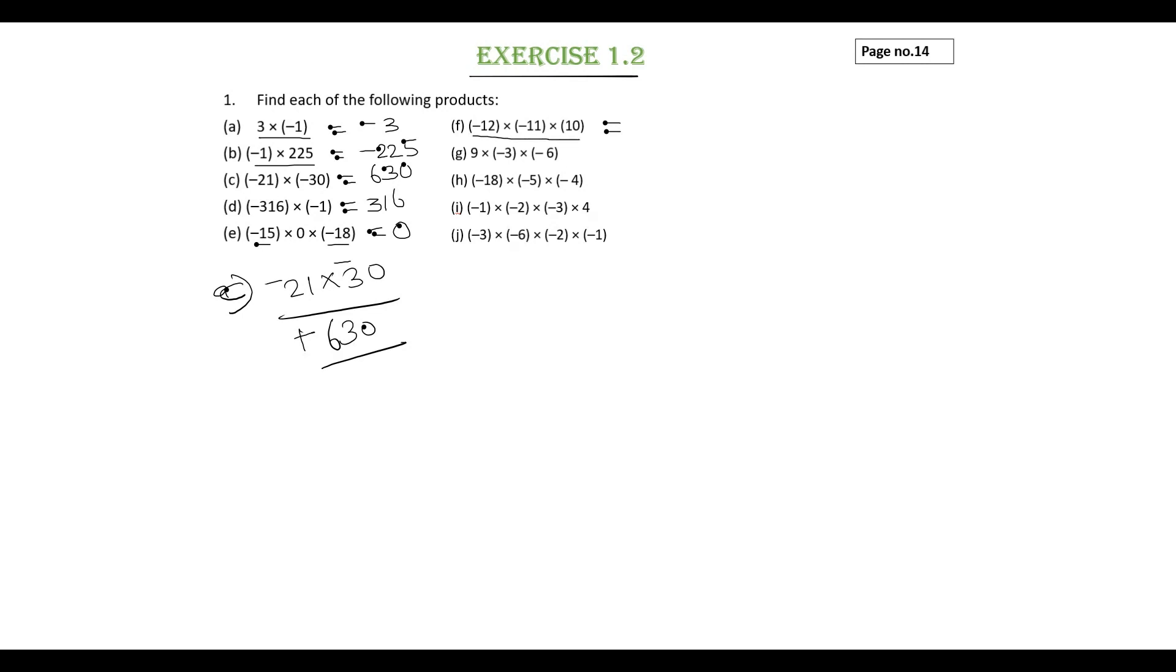F subdivision, minus 12 into minus 11. So first perform 12 into 11. 12 into 11 is 132. Two numbers have same sign, so the result will be positive. Plus 132 into 10 will be 1320.